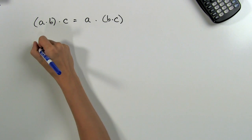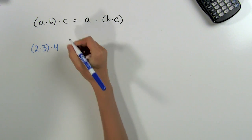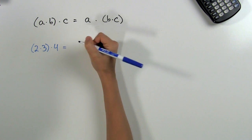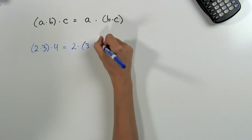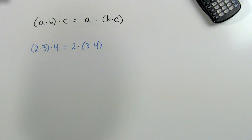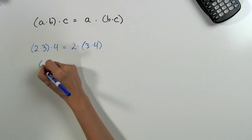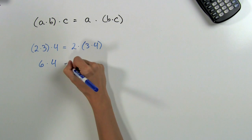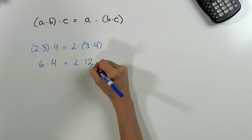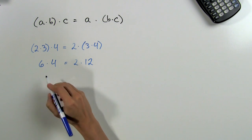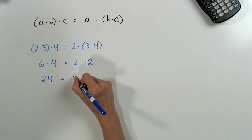For example, if we have (2 × 3) × 4, the associative property tells us that this should be equal to 2 × (3 × 4). According to our order of operations, we have to do everything in parentheses first. So here we have 2 × 3 = 6, times 4; and here we have 3 × 4 = 12, so 2 × 12. And of course 6 × 4 = 24, and 2 × 12 = 24.